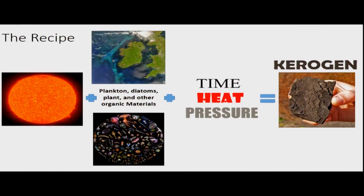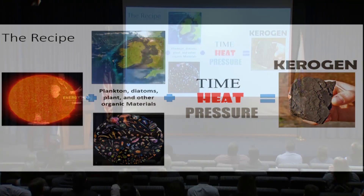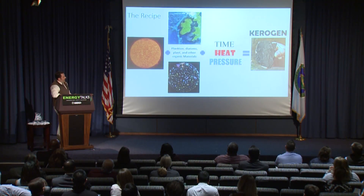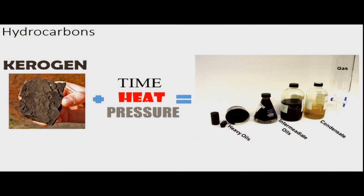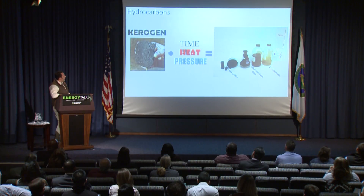This is the recipe I wanted to introduce: solar energy combined with organic materials, combined with time, heat, and pressure, gives us a precursor material to hydrocarbons called kerogen. It's black rock, oily to the touch — really just hydrocarbon-rich compressed material. With more time, heat, and pressure, this rock is converted into liquids or gases. That process is called catagenesis — converting kerogen into the hydrocarbons we use today.